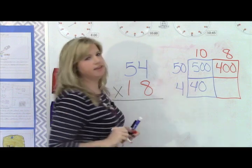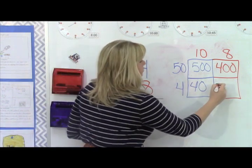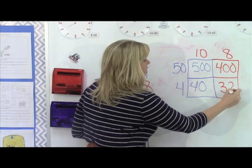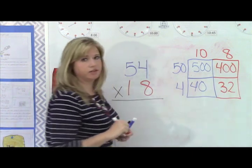Then I have four times eight, which is 32. And I'm not going to add any zeros because I don't have any zeros there.